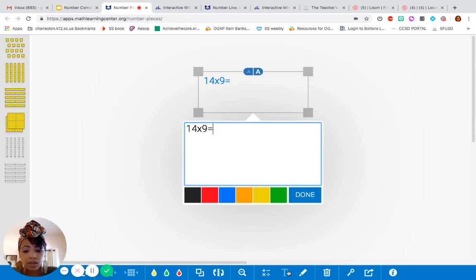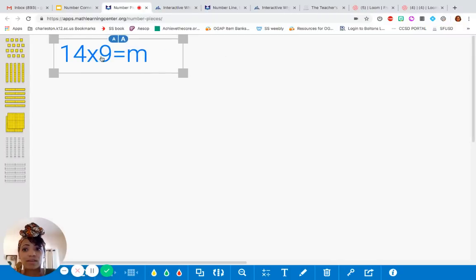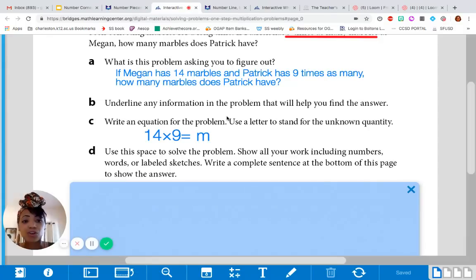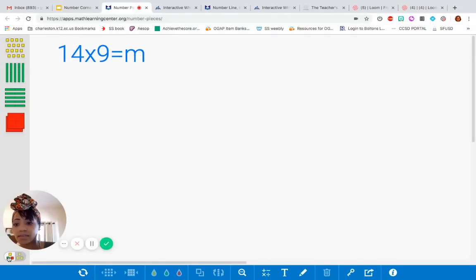Just to make sure that we are clear on what we're doing, I'm going to put the problem at the top of the page. We know that we're doing 14 times 9 equals M, which is for marbles. The question asked for us to figure out how many marbles Patrick has, and we know Megan has 14. So, if you recall, the question said, show all your work, including numbers, words, or sketches. So that's exactly what I'm going to do. I'm going to create a sketch. I know 14 times 9 means that I have 14 nine times. And so I'm going to create that with my base 10 number pieces here.